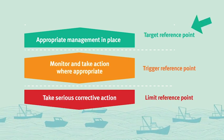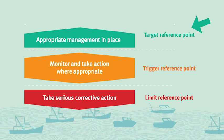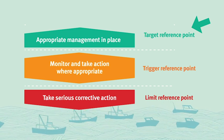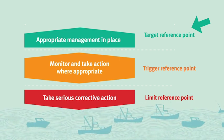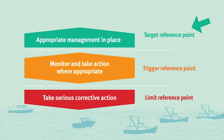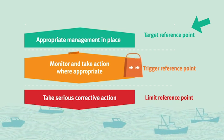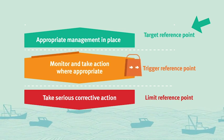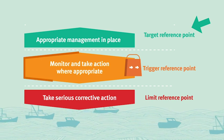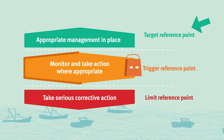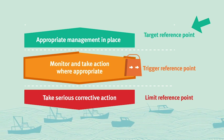If a fishery's performance exceeds the target, the decision rules may increase the overall catch allowed to be taken through increases to quotas or bag limits. However, if the fishery performance is decreasing and a trigger reference point is reached, management actions would be put in place to allow the stock to recover and avoid reaching the limit reference point.